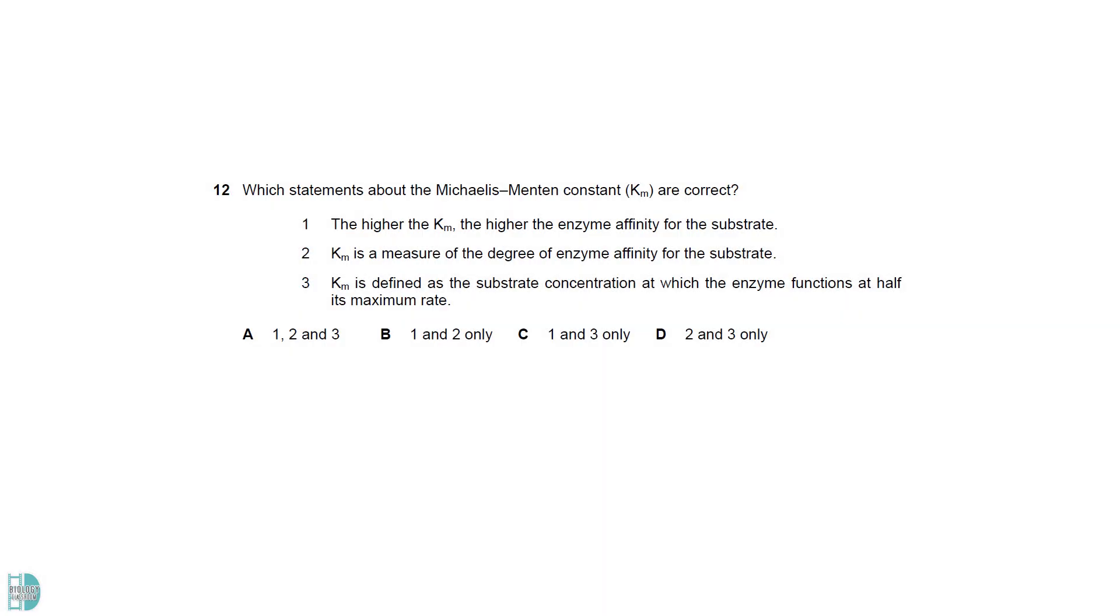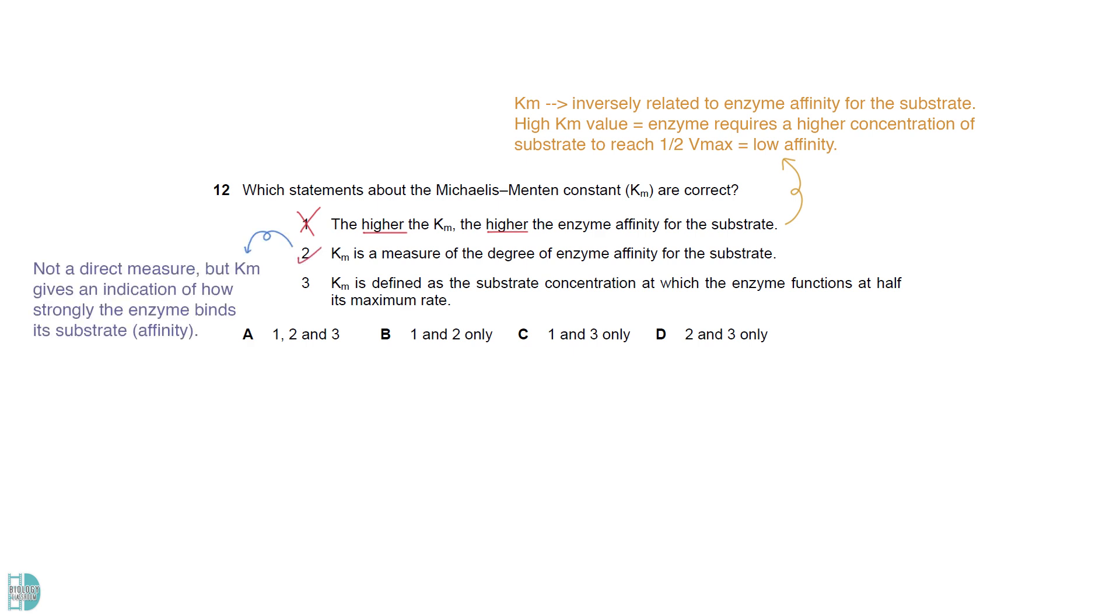Statement 1 is incorrect. Km is inversely related to enzyme affinity for the substrate. A high Km value means that the enzyme requires a higher concentration of substrate to reach half of its Vmax, indicating a low affinity. Statement 2 is correct. While it is not a direct measure, Km does give an indication of how strongly the enzyme binds its substrate. Statement 3 is the correct definition of Km.